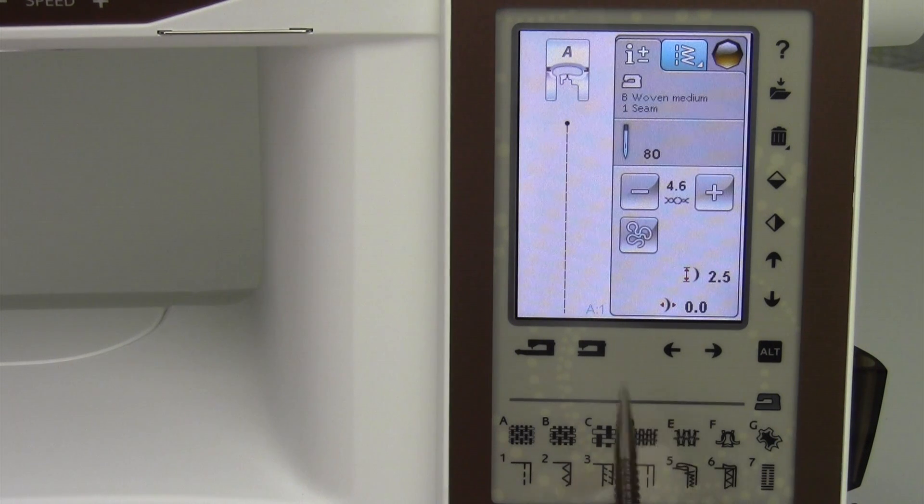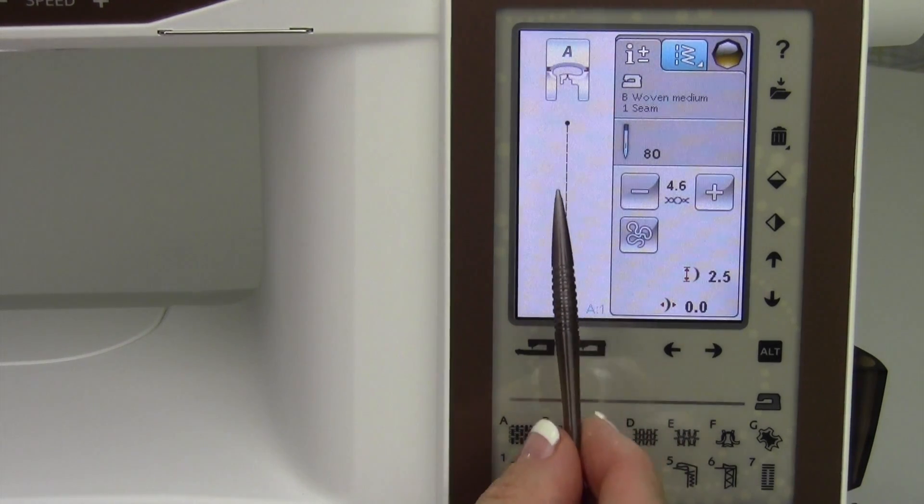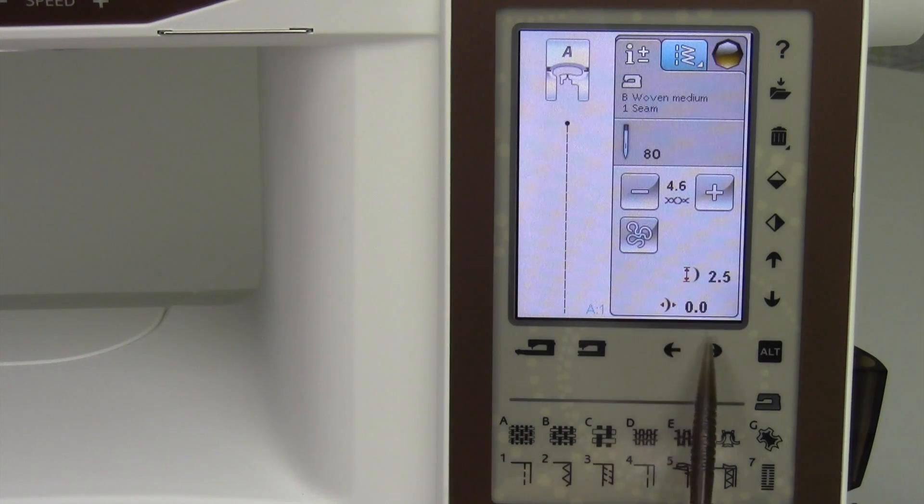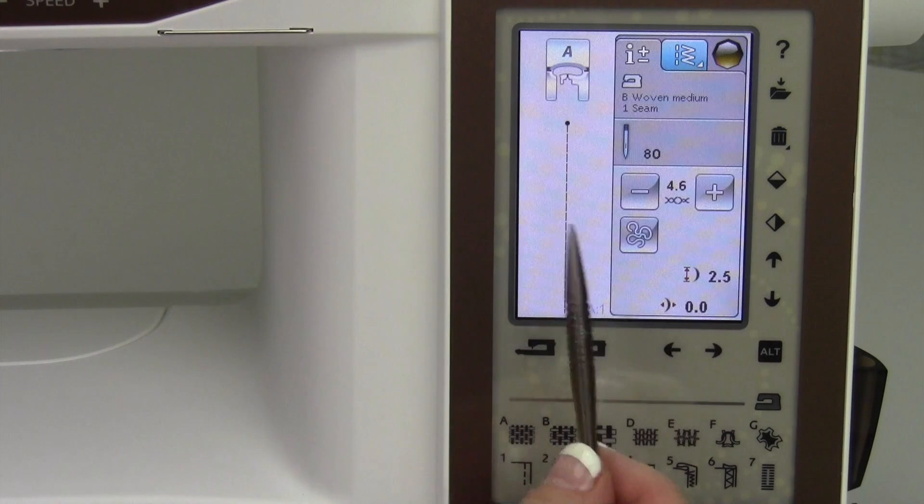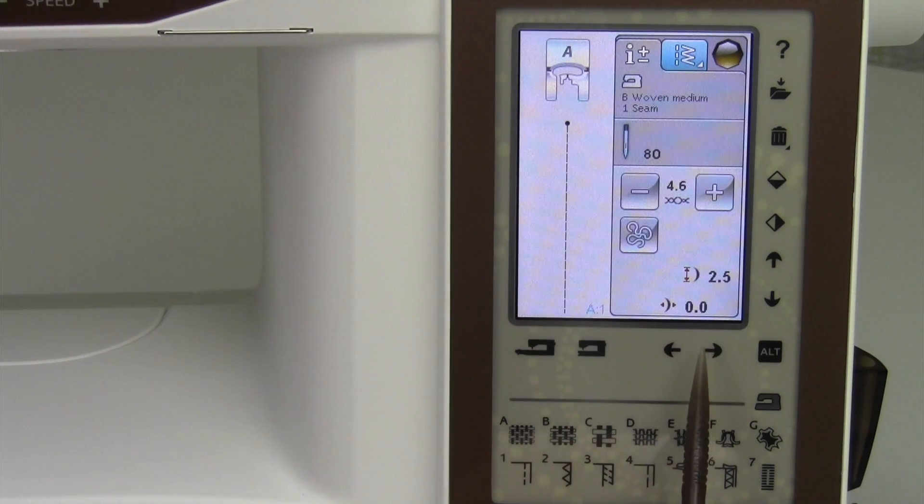Let's talk needle positions. I get excited because on this machine, there are 29 needle positions. In a straight stitch, you'll notice right here, this is often used for stitch width. We don't have stitch width with a straight stitch; we have needle positions.